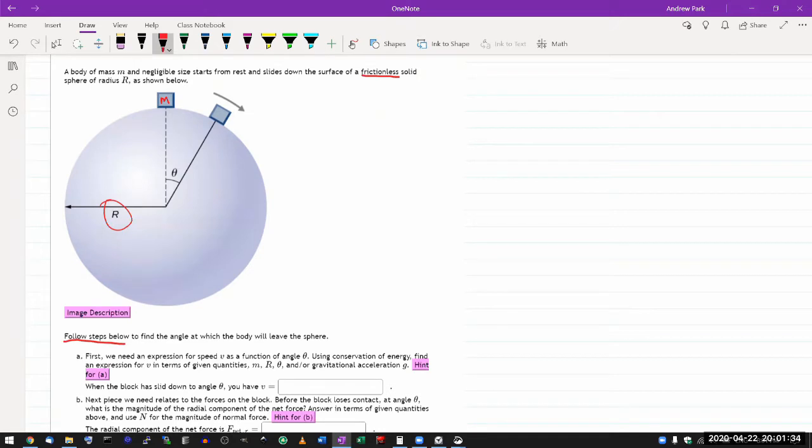It says first, we need an expression for speed V of the box as a function of angle theta. Using conservation of energy, so I guess we'll use conservation of energy, find an expression for V in terms of given quantities. All right. So we will use conservation of energy.